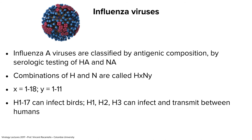Influenza A viruses are classified by the serology of the HA and NA glycoproteins in the membrane — we call them HXNY, like H1N1 or H3N2. We've identified 18 different hemagglutinins in the wild and 11 different neuraminidases. H1 through 17 can infect birds; number 18 was found in a bat. Among humans, only H1, H2, and H3 can infect and transmit between humans. In the past 100 years there have been a series of antigenic shifts with influenza virus leading to pandemics — a pandemic being a global epidemic where many people are infected.